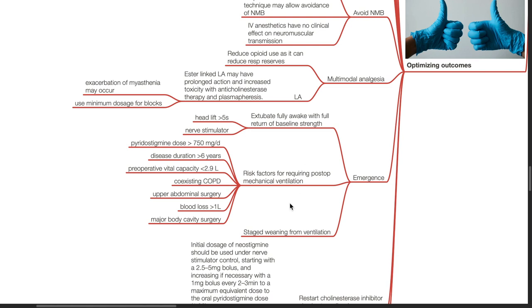Risk factors for requiring post-operative mechanical ventilation in patients with myasthenia gravis include pyridostigmine dose exceeding 750 mg per day, disease duration of more than 6 years, pre-operative vital capacity less than 2.9 liters, coexisting COPD, upper abdominal surgery, blood loss more than 1 liter and major body cavity surgery.